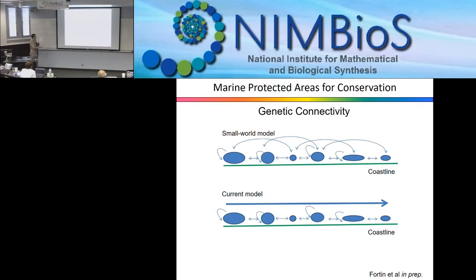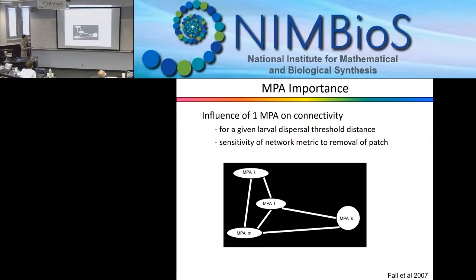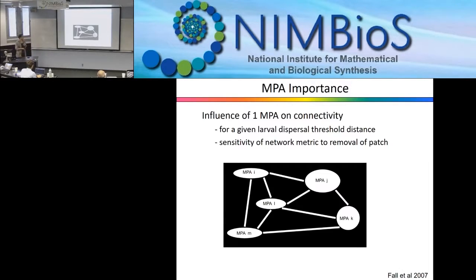We need to think about our hypothesis of movement and then determine how one marine protected area is more important than another. We can do what we call patch importance — or here, marine protected area importance — using a jackknife approach. We compute a statistic with all the marine protected areas, then remove one, compute the statistic again, and see how much that particular area was crucial to maintaining gene flow or animal movement. We do this iteratively to obtain a ranking of which node is most important.